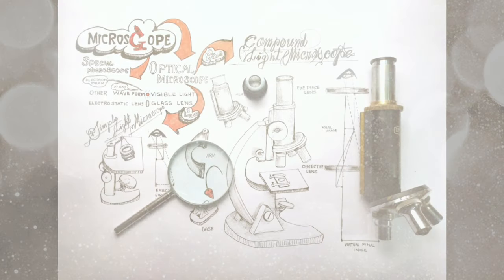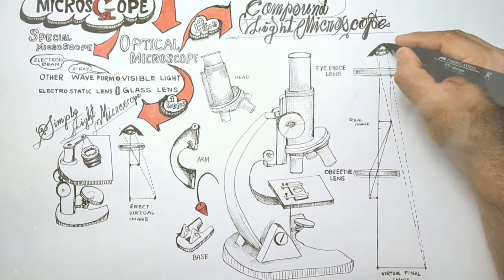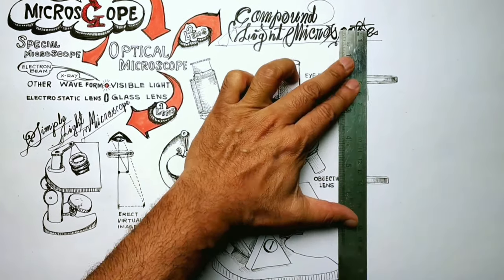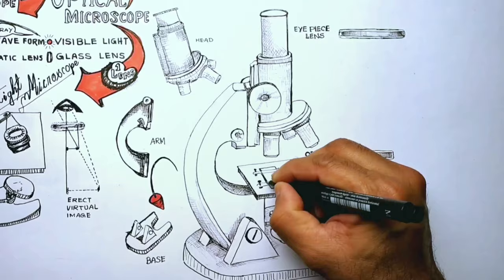If the question is which instrument has changed human perception of life, even if it is not read anywhere, we can still answer it with our eyes closed. It's a microscope.